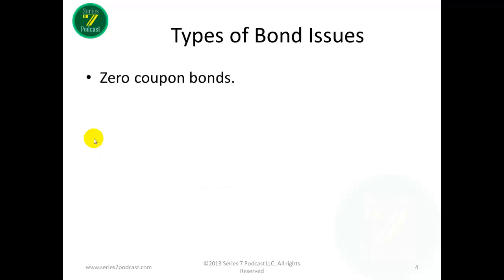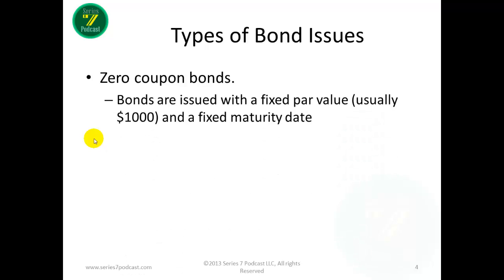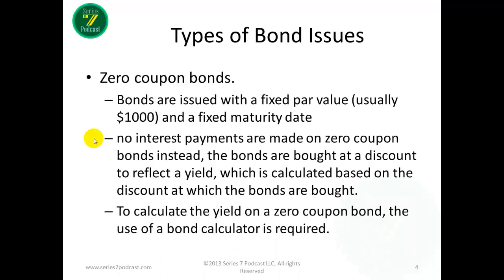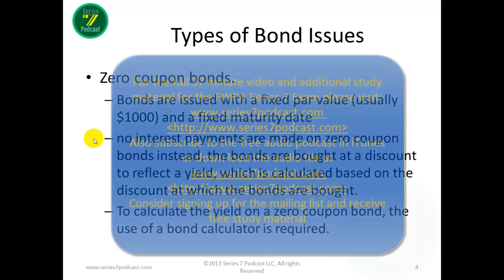There are several types of bond issues. Zero coupon bonds are bonds that are issued with a fixed par value — usually $1,000 — and a fixed maturity date. The interest rate is derived by what you're willing to pay for that bond. No interest payments are made on a zero coupon bond; instead, the bonds are bought at a discount to reflect a yield calculated based on the discount at which the bonds are bought. You use a bond calculator to calculate the yield on a zero coupon bond, and you won't usually be asked to calculate it on the exam because it's quite elaborate.